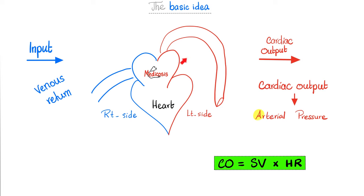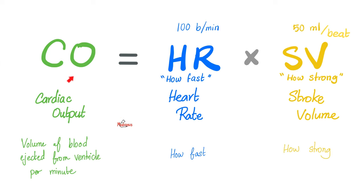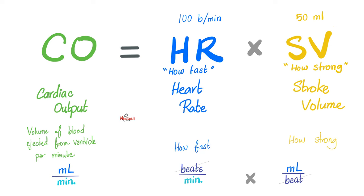Let's imagine the heart as one chamber. There is input coming in and output leaving, going to arteries and therefore responsible for arterial blood pressure. How do I measure the output of that factory? Heart rate — how many times the heart pumps per minute — times stroke volume — the volume ejected per beat. Heart rate is measured in beats per minute; stroke volume in mL per beat. The beats cancel out, leaving mL per minute — the unit for cardiac output — which is about 5 liters per minute.